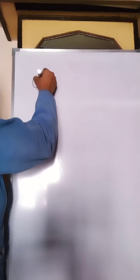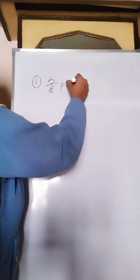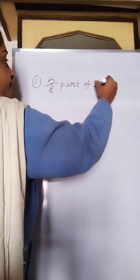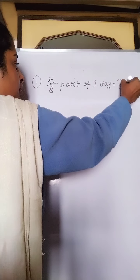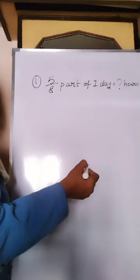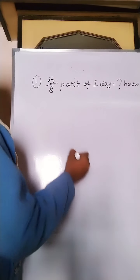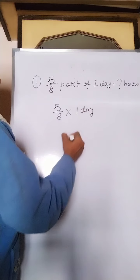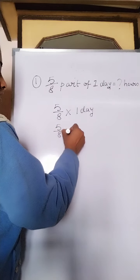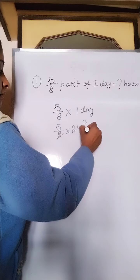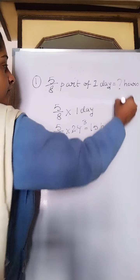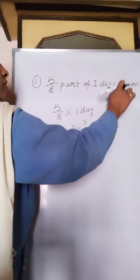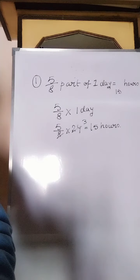The first sum that we will do today is: 5/8th part of 1 day is equal to how many hours? So we know that 1 day is equal to 24 hours. So 5/8 into 1 day you have to do. 1 day we all know is 24 hours. So 5 by 8 into 24, that is 3, you will get 15 hours. So the answer will be 15 hours. In this way you will solve the objective sums.